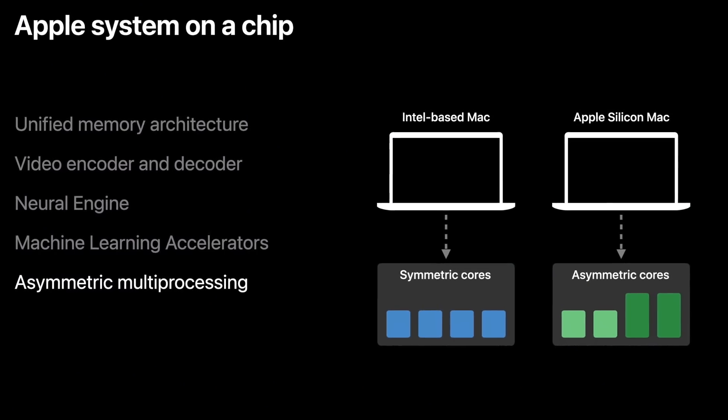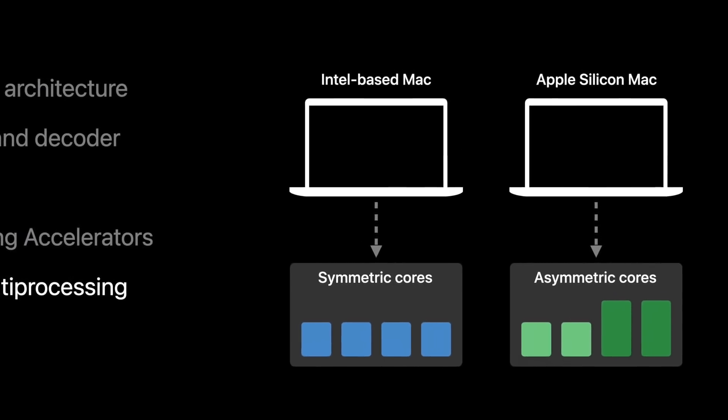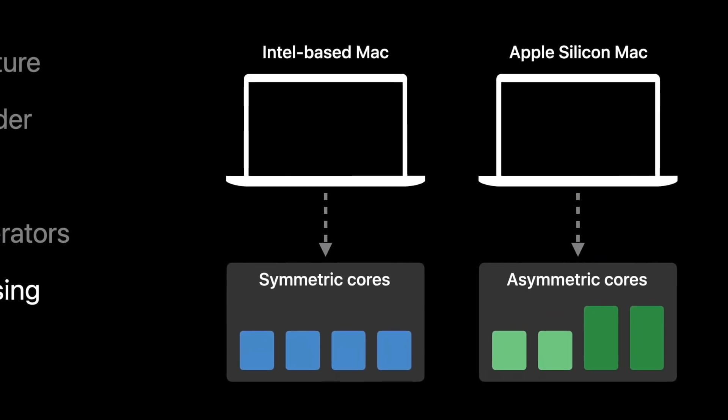One of the biggest challenges will be for apps that make use of multi-threading, since Intel and ARM CPU architectures are very different here. Your Intel CPU has multiple cores — effectively multiple CPUs all on one chip — and these cores are all identical in their performance. This is known as symmetric multiprocessing. ARM CPUs, on which Apple Silicon is based, have asymmetric multiprocessing. The cores are not all identical — there are high-performance cores and there are power-efficient cores.